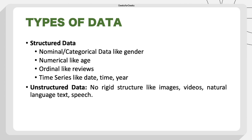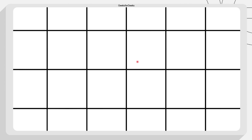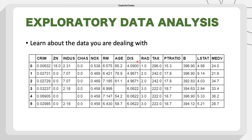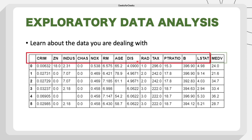Then comes unstructured data, which has no fixed structure — for example, images, videos, or text data. You need to treat this data first. Then comes a very important step: exploratory data analysis. When exploring our data, we first try to learn about the data we are dealing with. For example, if we are predicting median house values, we figure out which input features are really important and identify any missing values.